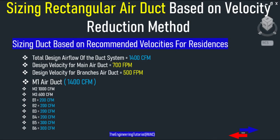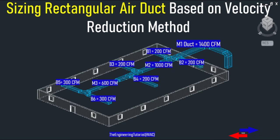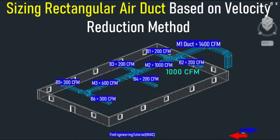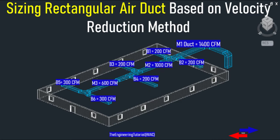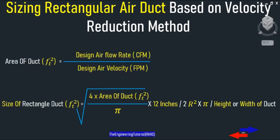For example, there is a design air flow rate of 1400 CFM, and we have been asked to find the sizes of a rectangular air duct for design recommended velocities of 700 FPM for main duct and 500 FPM for branch duct. In the example, 1400 CFM flows through the main duct, minus 400 CFM for B1 and B2, which leaves 1000 CFM for M2. Again minus 400 CFM for B3 and B4, which leaves 600 CFM for M3, minus 300 CFM for B5 and 300 CFM for B6.